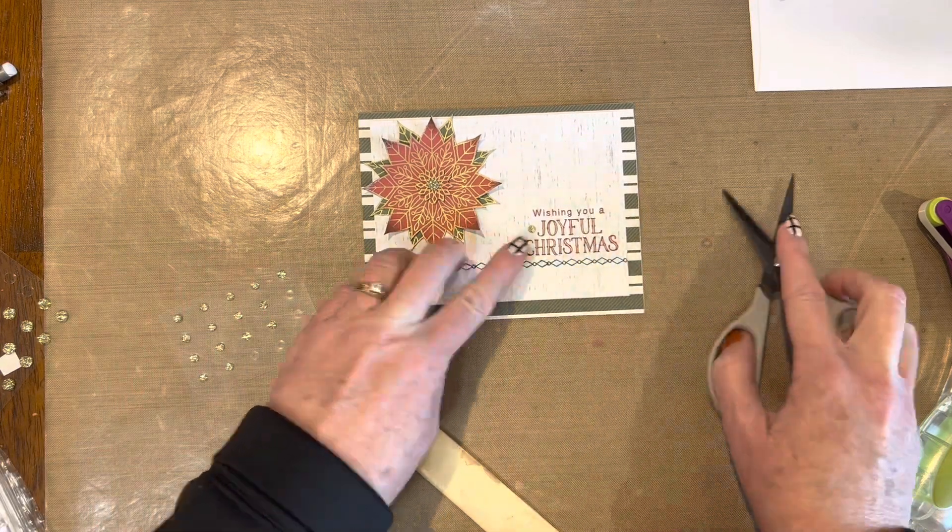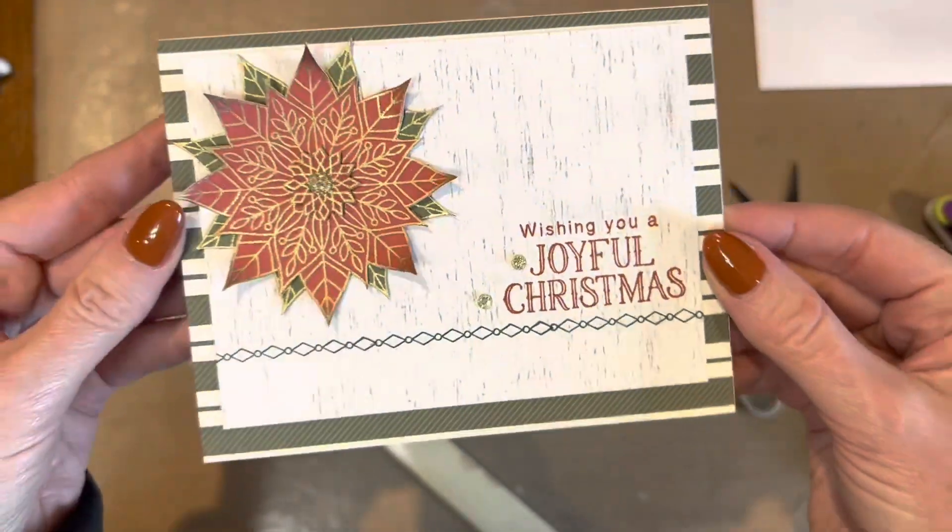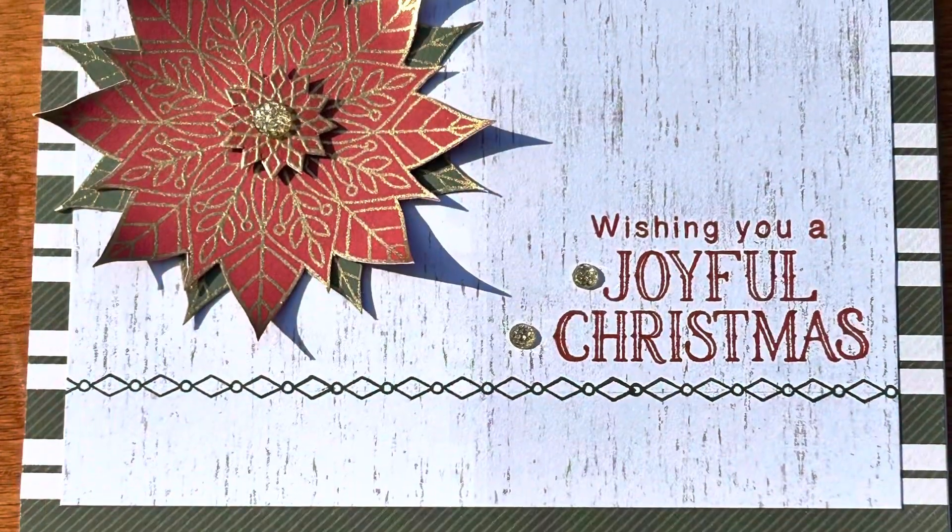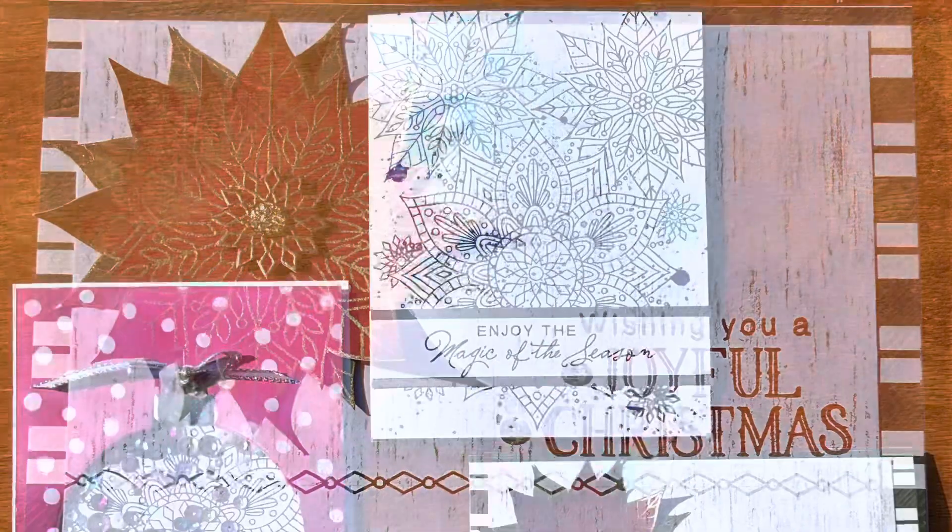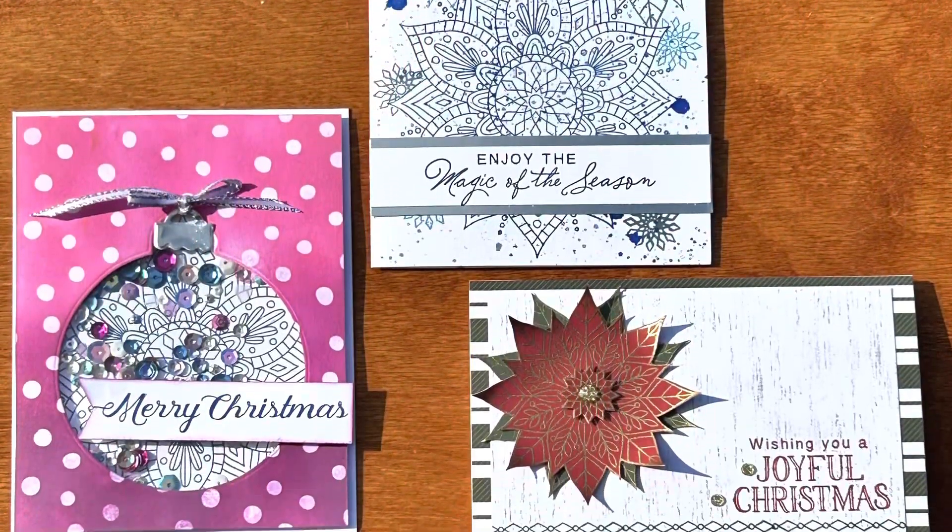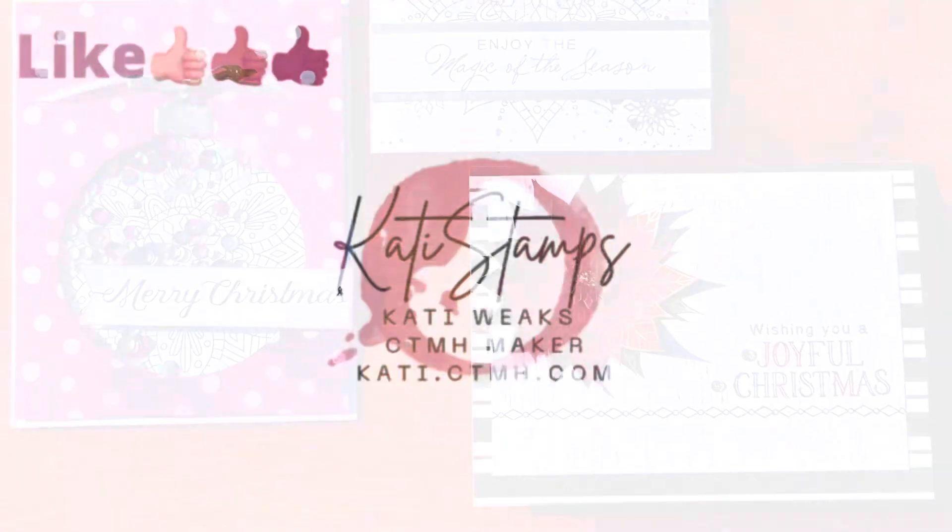And there you go. You have a pretty quick card. Embossing and cutting out those layers. See the shadows. I'm telling you, it has so much dimension. It's gorgeous. That's what took the longest though was cutting that out. So here are the three cards once again.